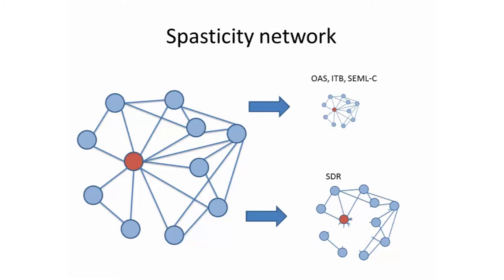Treatment is of two types. One type includes oral antispastics, intrathecal baclofen, or single- and multilevel chemoneurolysis, which diminish the potency of the network but leave it intact. The other type is selected dorsal rhizotomy, which is a very destructive procedure that diminishes its potency by destroying it.